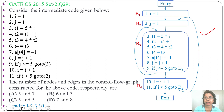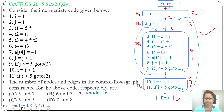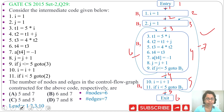Now we find the number of nodes and edges in this control flow graph. Counting the nodes: 1, 2, 3, 4, 5, 6 — there are 6 nodes. Counting the edges: 1, 2, 3, 4, 5, 6, 7 — there are 7 edges. Checking the options, 6 nodes and 7 edges corresponds to option B, so the answer is option B.